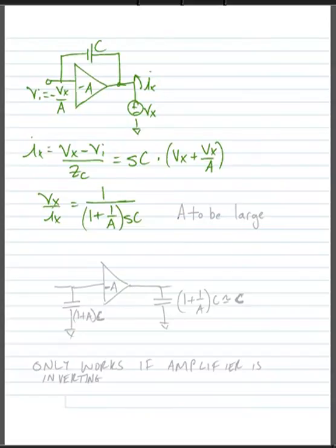Now in the normal case, we'd like the gain of our amplifier to be large, so we'd like A to be large. And what would happen here then is if A was large, we would just see that our capacitance looked about the same as it did when it was connected across the amplifier.